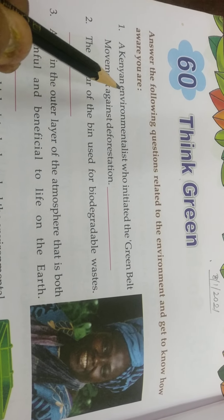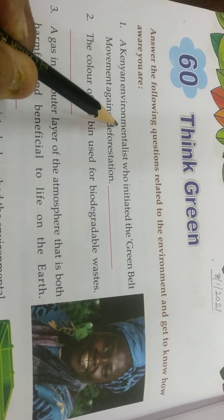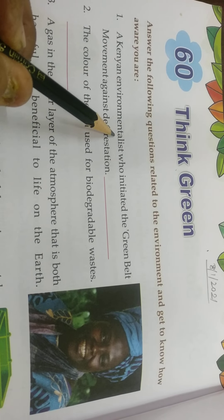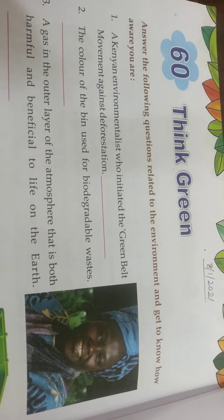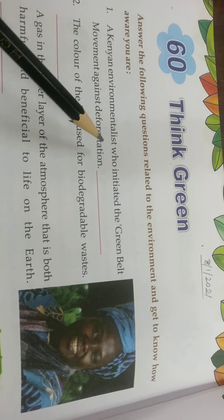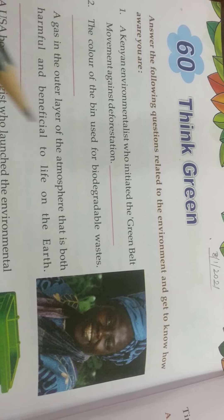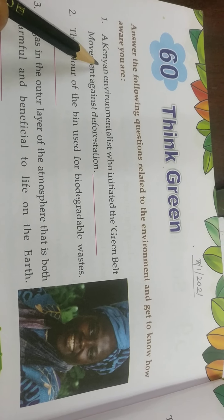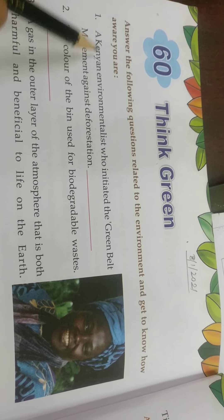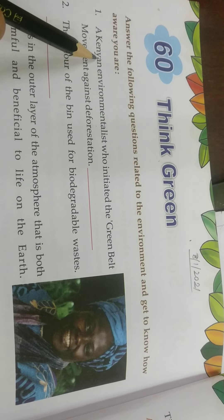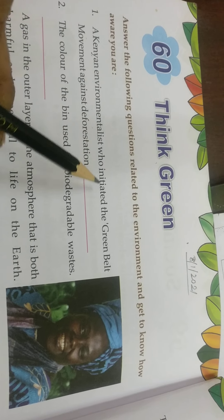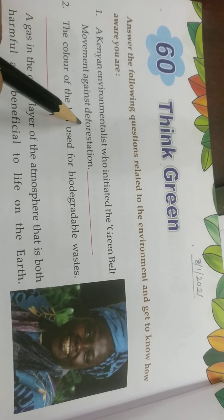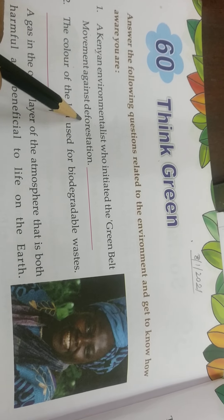The first question: a Kenyan environmentalist. An environmentalist is someone who studies the environment, talks about it, or researches more into it — they are more into that. Kenya is a country in Africa, and this person initiated the Green Belt Movement against deforestation.